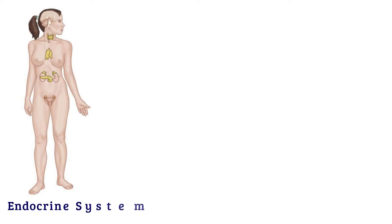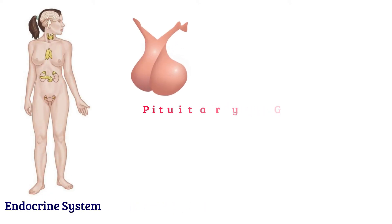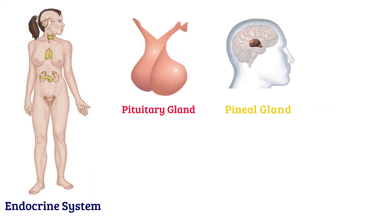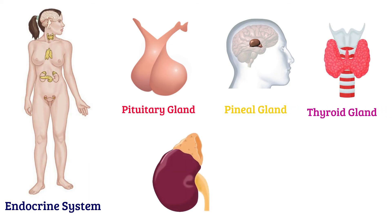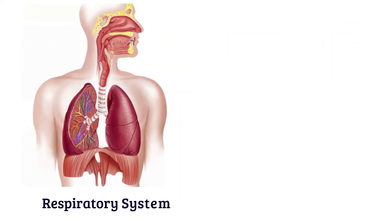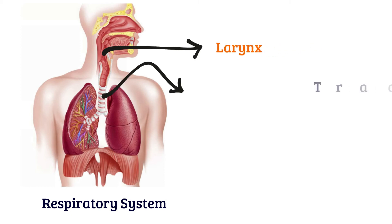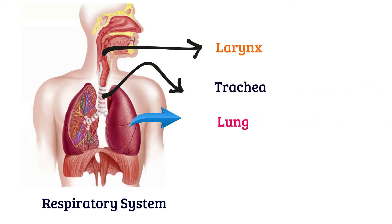Endocrine system: pituitary gland, pineal gland, thyroid gland, adrenal gland. Respiratory system: larynx, trachea, lung, diaphragm.